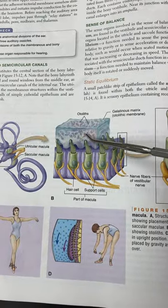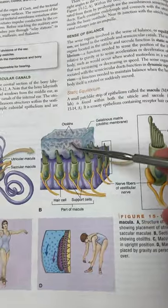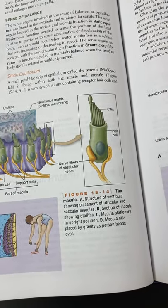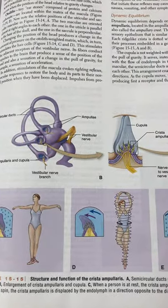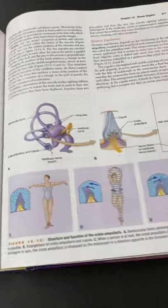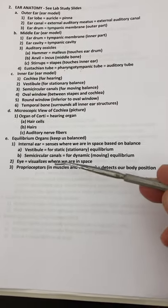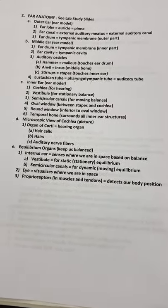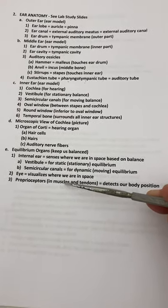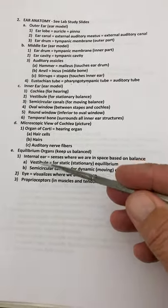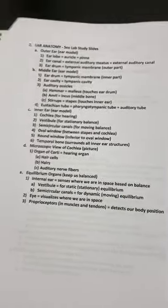Gel with little rocks called otoliths in it — when you move, it moves the fluid and gel in your inner ear, which stimulates the hairs, which stimulates the hair cells, and goes to your brain to tell you where you are. The other two things that help with balance — and all these work together — are the eye, which tells you where you are in space, and proprioceptors: the muscle spindle fibers and golgi tendon organs in muscles and tendons. All three — inner ear, eye, and proprioceptors — work together to keep you balanced.